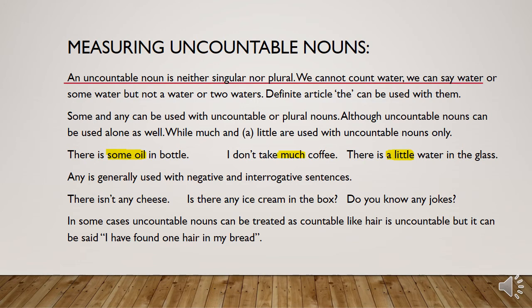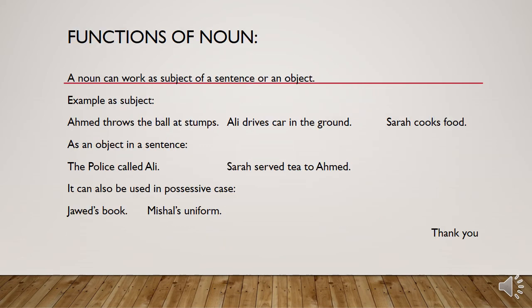Uncountable nouns take 'a little', 'much', or 'some'. 'Some' can be used with both countable and uncountable nouns. 'Any' is generally used with negative and interrogative sentences — for example, 'There isn't any cheese', 'Is there any ice cream in the box?', 'Do you know any jokes?' In some cases, uncountable nouns can be treated as countable — for example, 'I have found one hair in my bread'. Similarly, 'news' is uncountable but we can say 'I have a bit of news for you'.